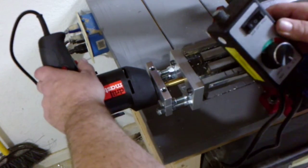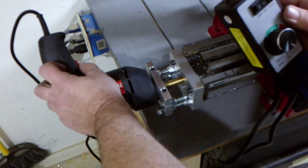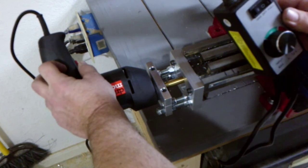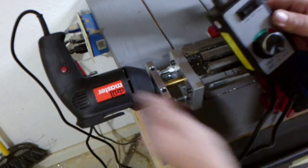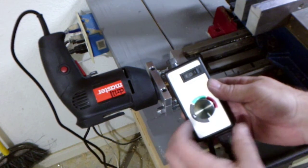To use the power feed, all you have to do is lock the trigger on the drill. Turn the switch on the controller to variable, then turn the knob.